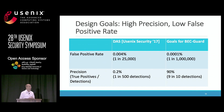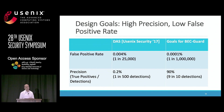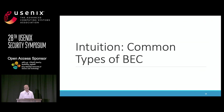At Barracuda, a lot of customers really don't have a security analyst team or any security people at all. So we tried to build an automated system called BECGuard, which was incorporated into a commercial product called Barracuda Sentinel, with a very low false positive rate — less than one in a million emails — and a precision above 90%. This means the system can automatically quarantine these emails without requiring an analyst.